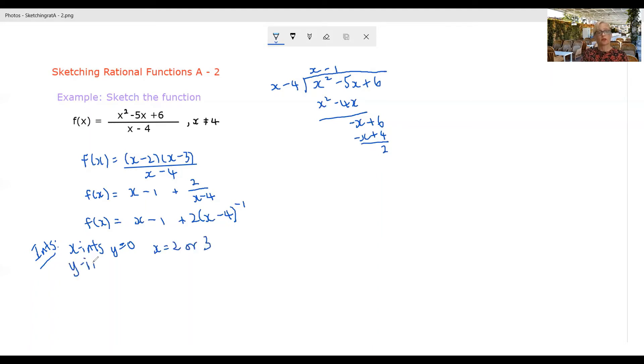Your y-intercept occurs when x is zero. So it's probably easiest just to sub straight into the original version there. And we get that y is negative six on four or negative three on two. You can keep that as a negative three on two or change it to negative one and a half. It doesn't really matter. So that's our intercepts.